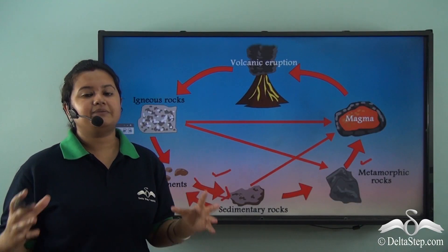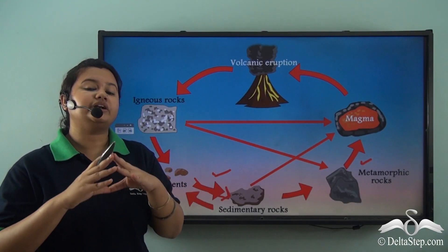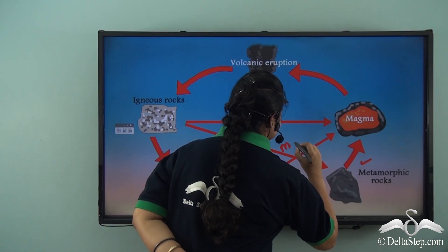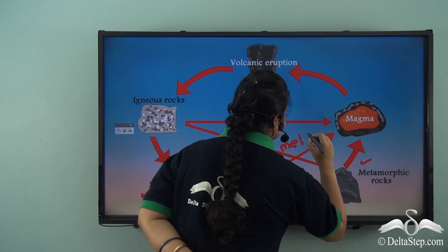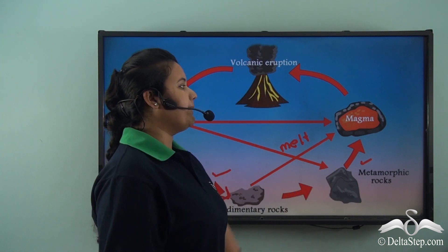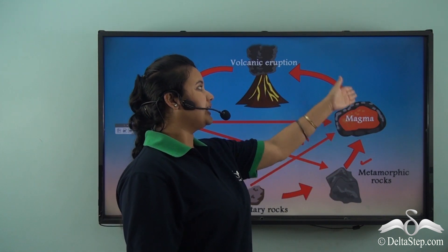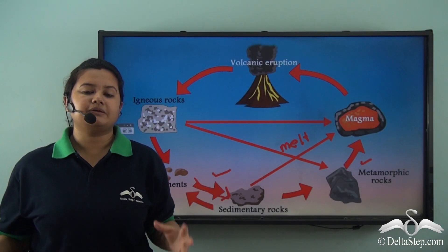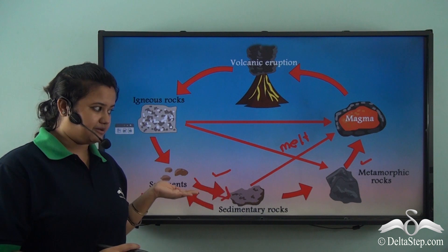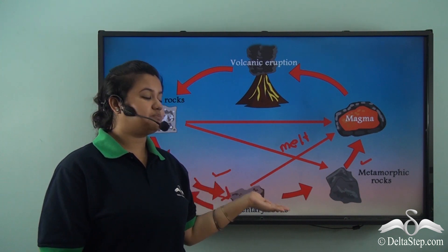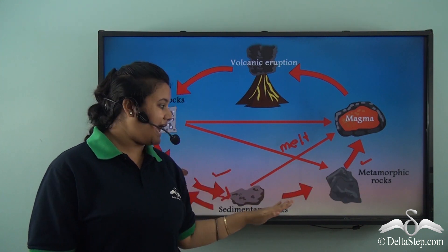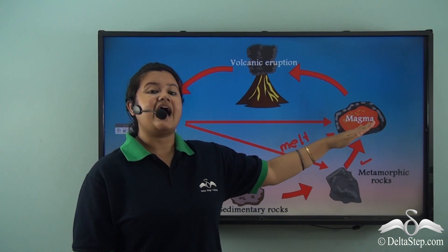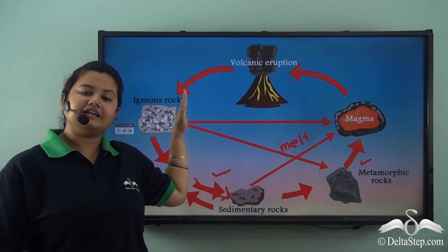Over time, sedimentary rocks go deeper into the earth and melt into magma. This magma again comes out as lava through a volcano. So sedimentary rocks may form sediments, they may form metamorphic rocks, and they may also melt into magma and eventually form igneous rocks.